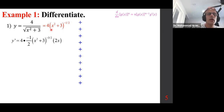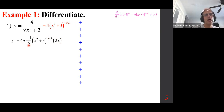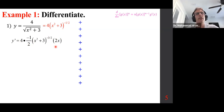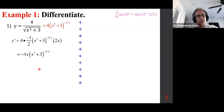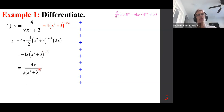Four times negative one half gives negative two, times 2x makes it negative 4x. We take this down, make it positive three halves — or we make it into a square root. The result is simplified with the expression in the denominator.